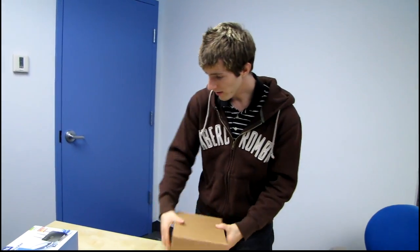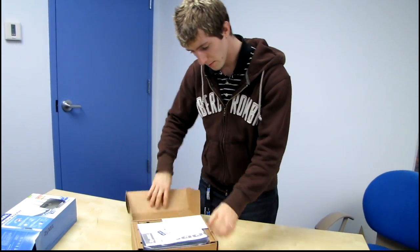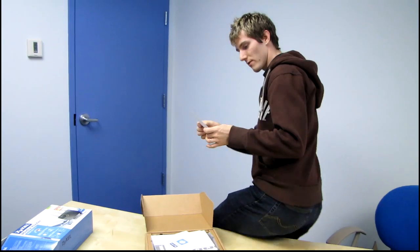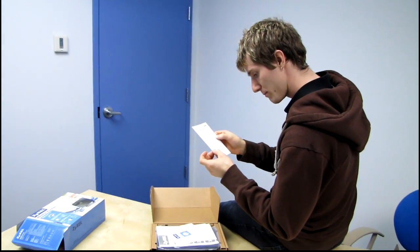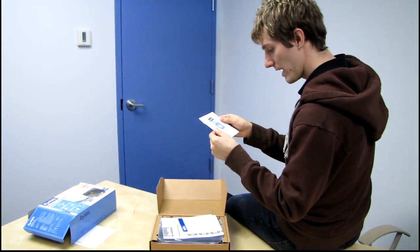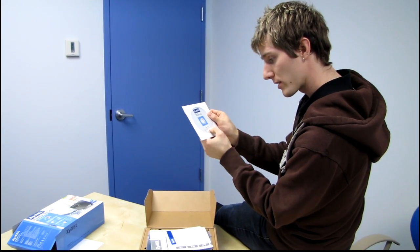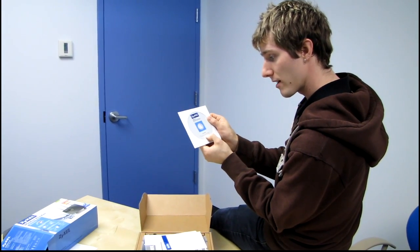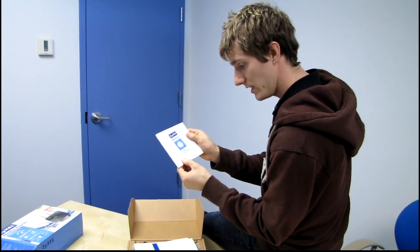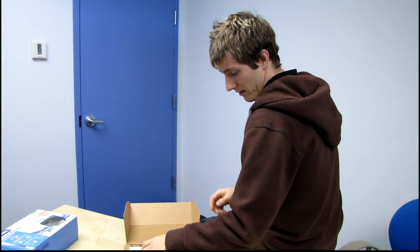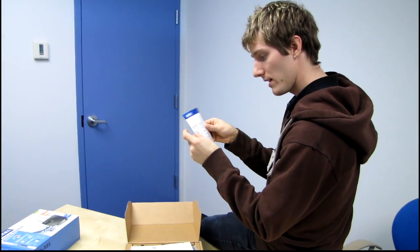Let's go ahead and pull this guy open and have a look at what we've got inside the box. So the first thing is a declaration of conformity, which I'm not particularly interested in. Next we have a utility users guide, quick start guide, Acrobat reader, and product registration CD. Next we have a warranty card.